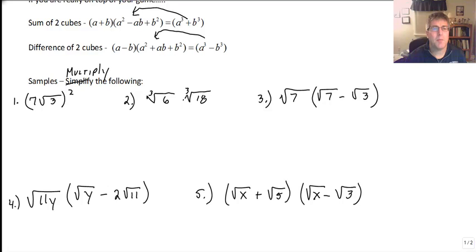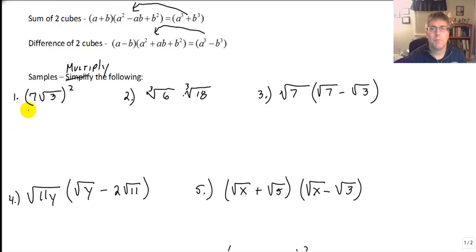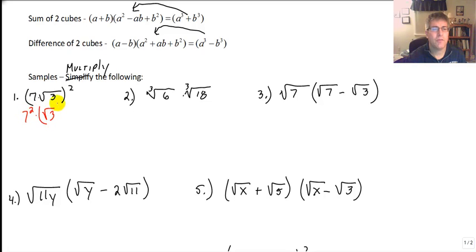Let's do some sample problems — let's multiply the following. The first one is 7 times radical 3, quantity squared. So we're squaring the 7 and squaring the radical 3. We have 7 squared and radical 3 squared, so that is 49 times 3, or 147.